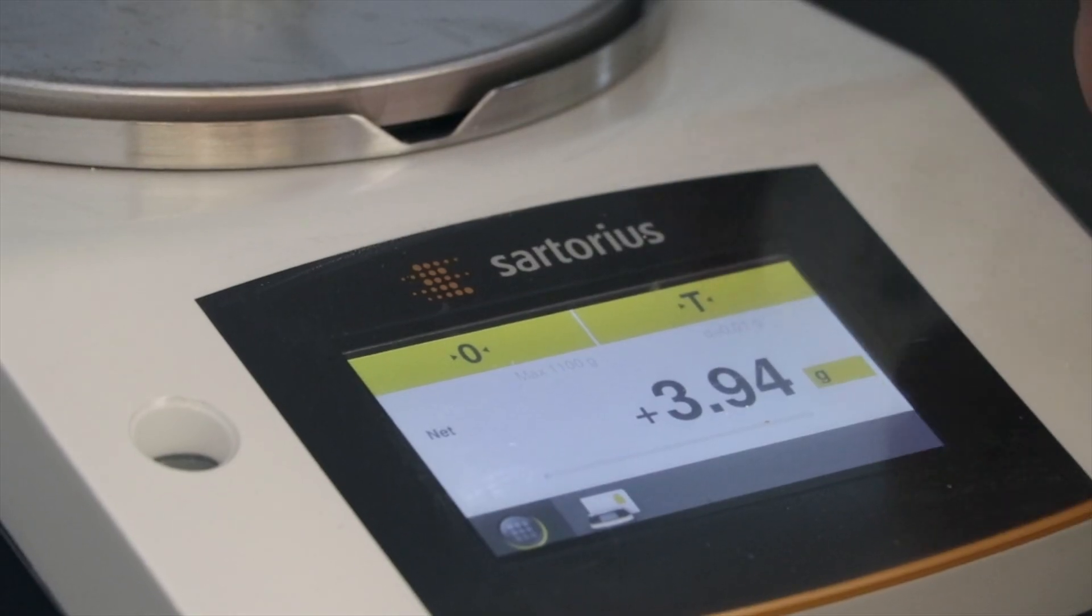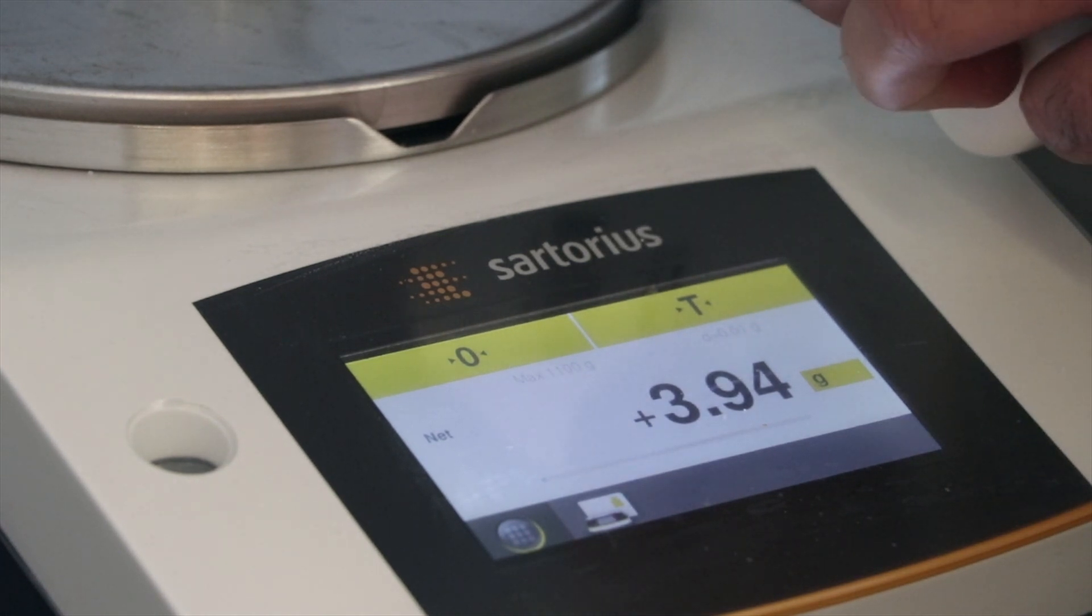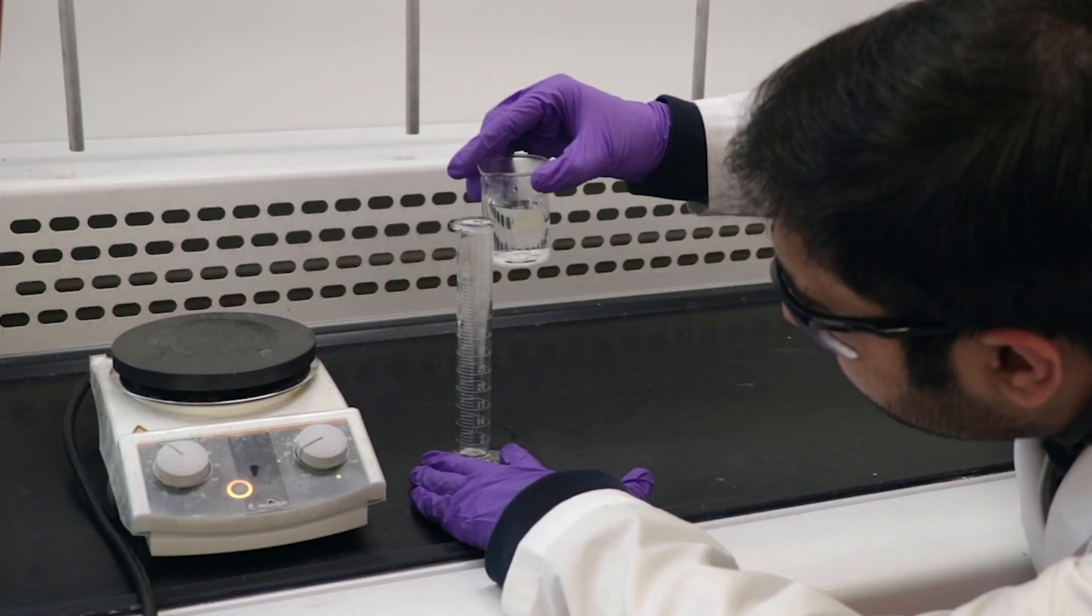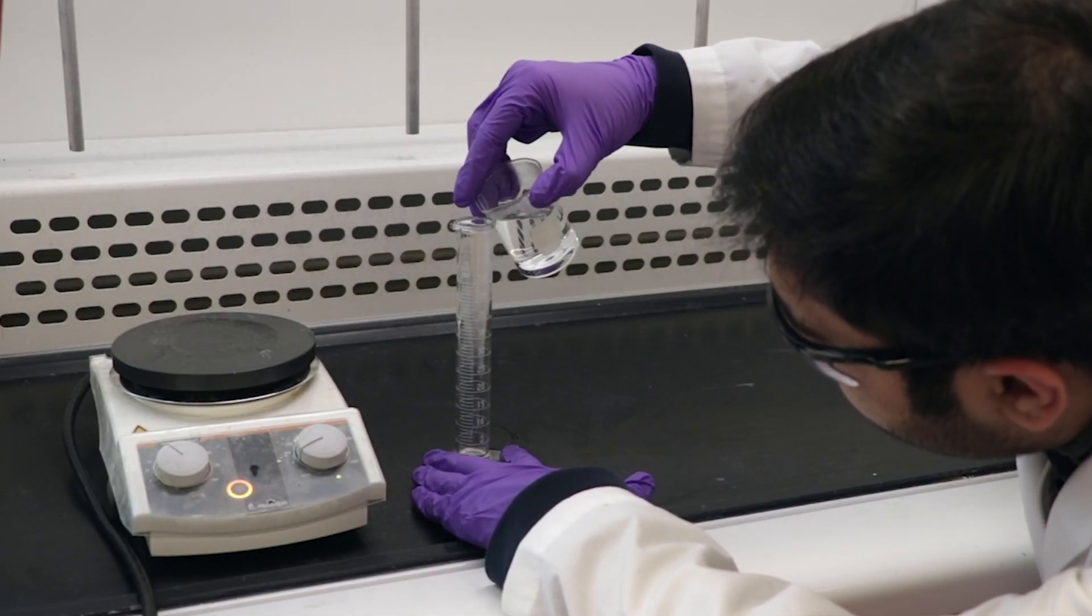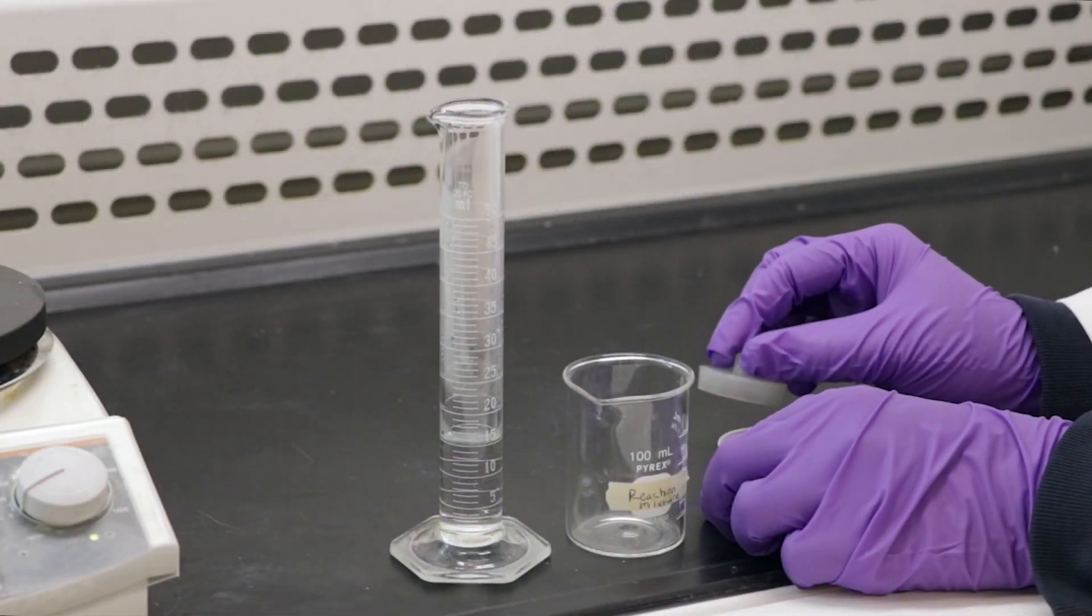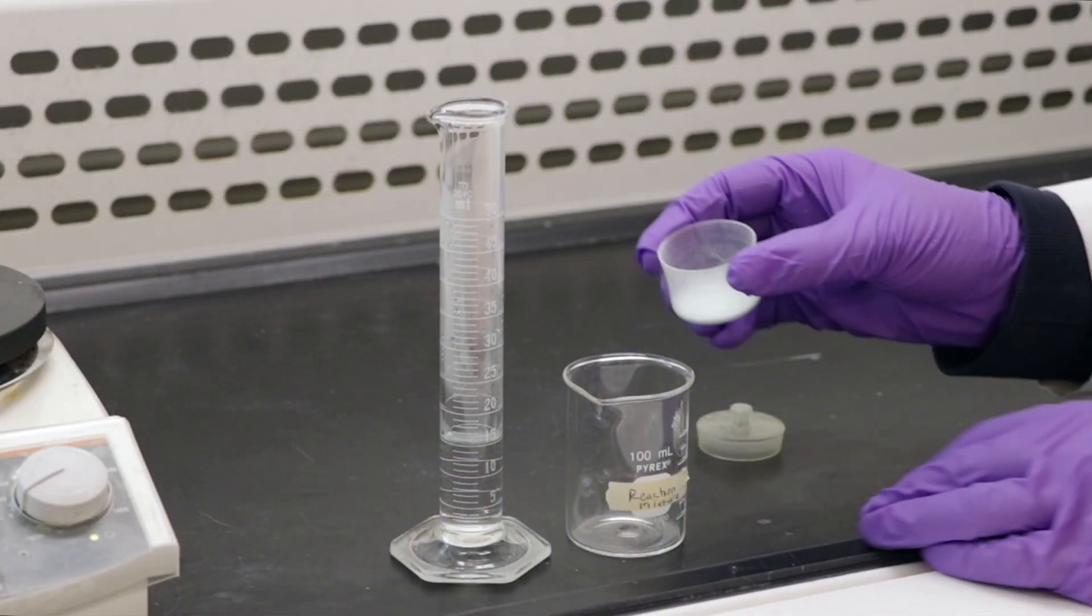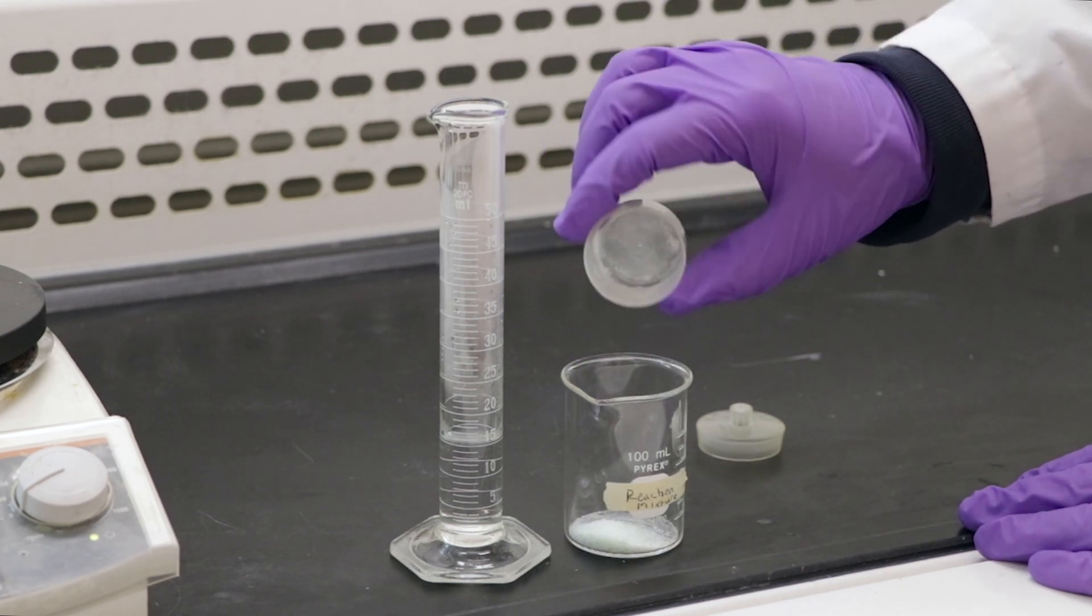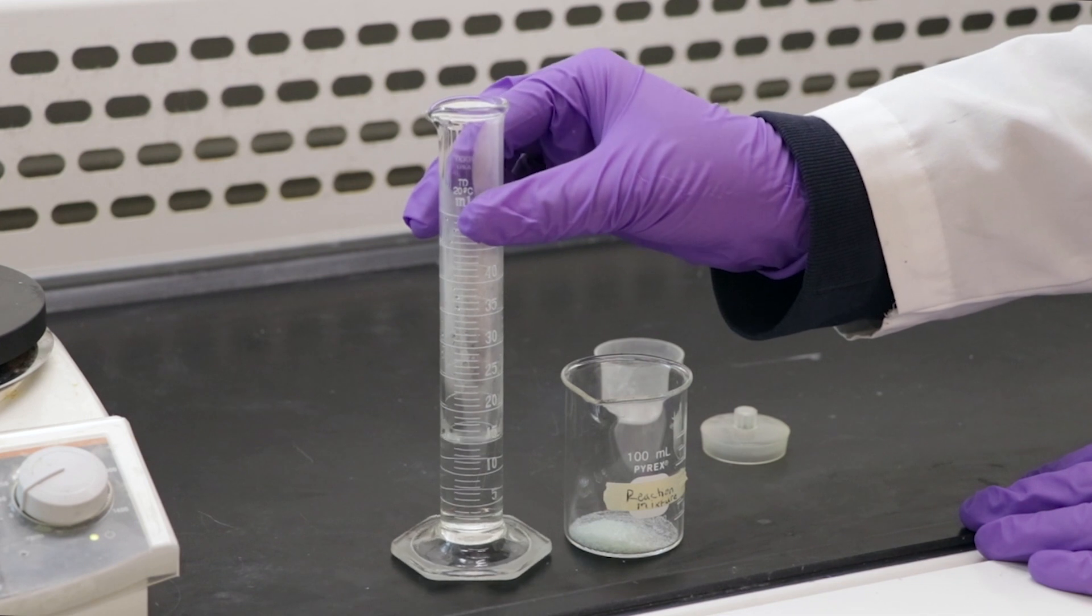This will be important when calculating your theoretical and actual yield at the end of the lab since this will be the mass of your limiting reagent. Take the ferrous ammonium sulfate back to the fume hood. Measure out 15 ml of warm water in a graduated cylinder. Add the ammonium sulfate to an empty 100 ml beaker and add the warm water.